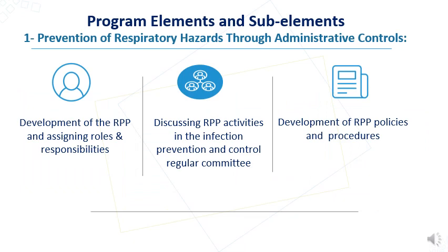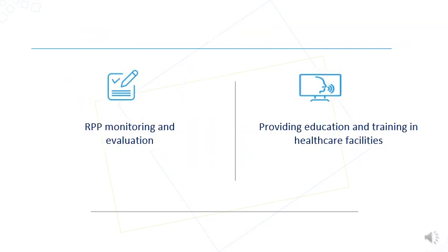Regarding the program elements and sub-elements — prevention of respiratory hazards through administrative controls — the sub-elements include development of the Respiratory Protection Program, assigning roles and responsibilities, discussing Respiratory Protection Program activities in the regular infection prevention and control committee, developing the respiratory protection program policy and procedure, and monitoring and evaluating the Respiratory Protection Program activities.